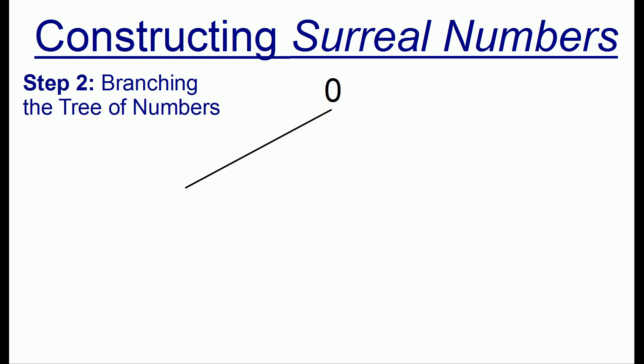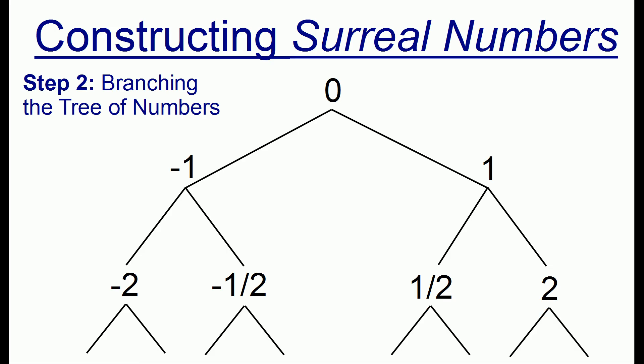We start out with 0, then we build the numbers negative 1 and 1, and each of those numbers can branch out to build different numbers of their own. Once we have these new numbers we branch out and build out new numbers. And eventually if we keep branching out infinitely many times we're going to generate all of the real numbers. All of the fractions, all of the irrationals, all of the positive and negative numbers. So that's how the surreal numbers are built up.